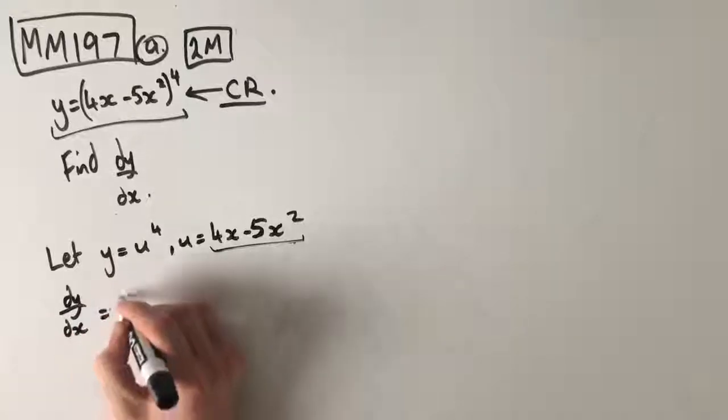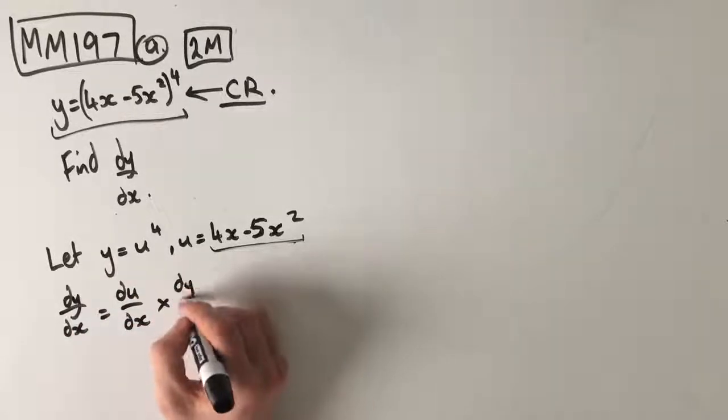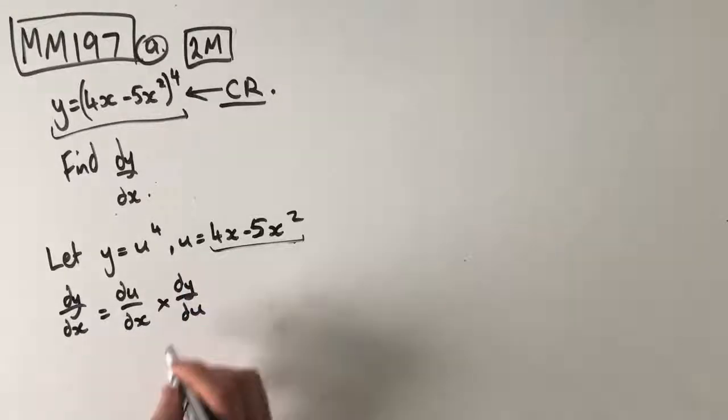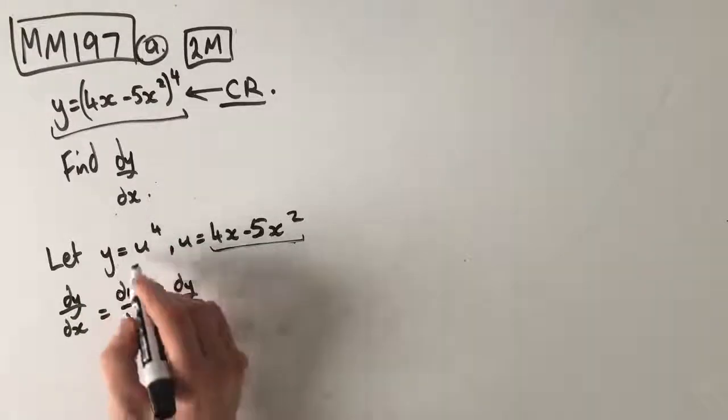So according to our chain rule, dy dx is equal to du dx times dy du. Oh, I don't know why I did it that way. It's normally the other way. So let's say dy du is equal to 4u cubed.